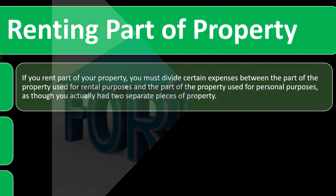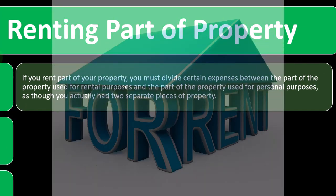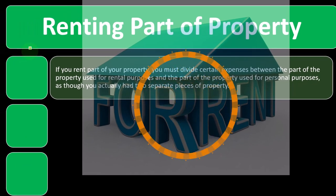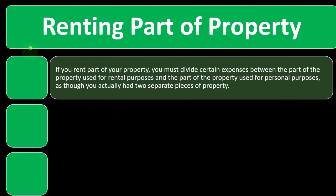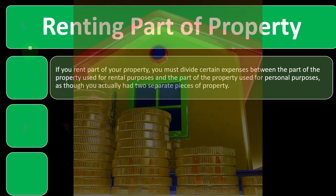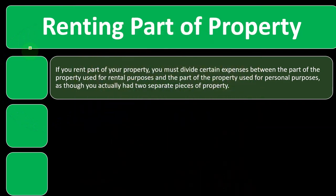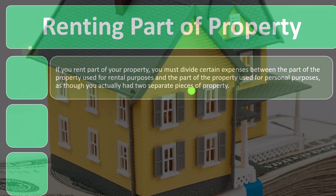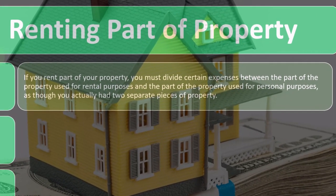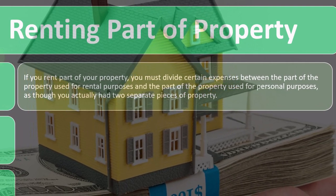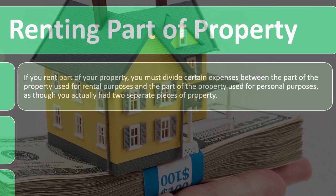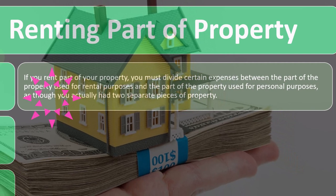So now we're talking about renting part of a property. In prior presentations, we've been focusing mainly on more straightforward scenarios where you have a separate piece of rental property that's 100% used for rental. Now that we've gotten the general concepts down, we'll take a look at some more complex wrinkles. So now we have renting part of property as an added complexity, and if you rent part of your property, you must divide certain expenses between the rental and personal portions.